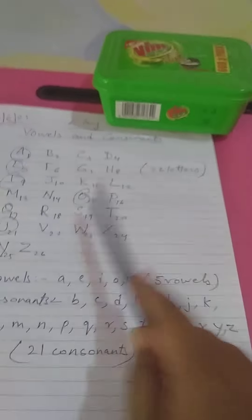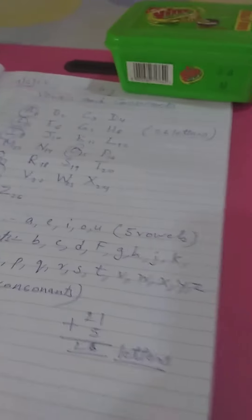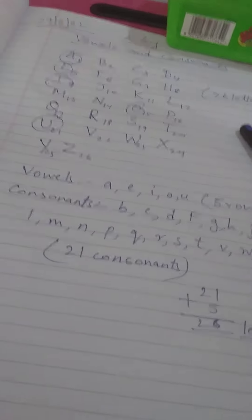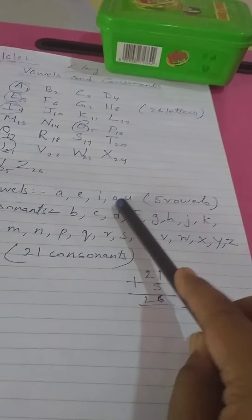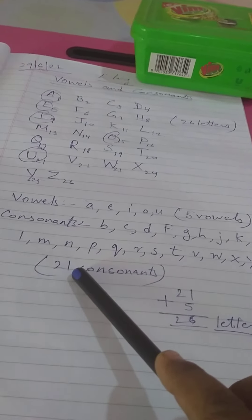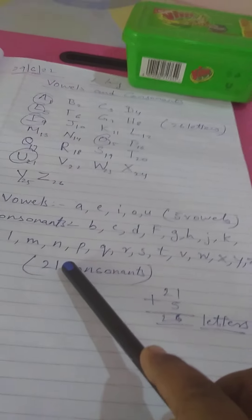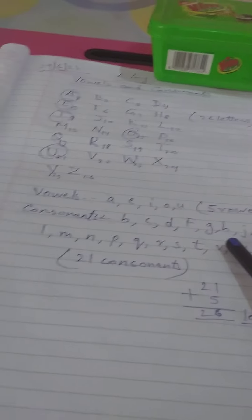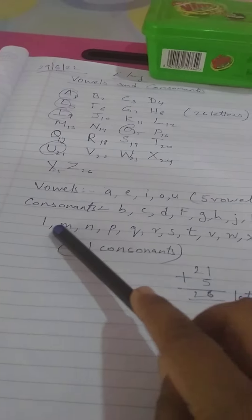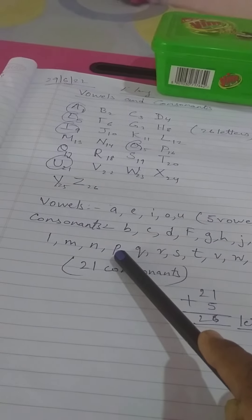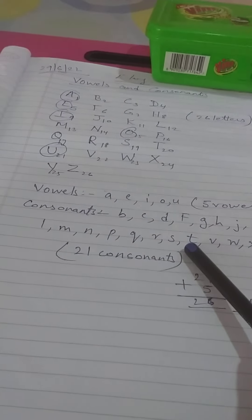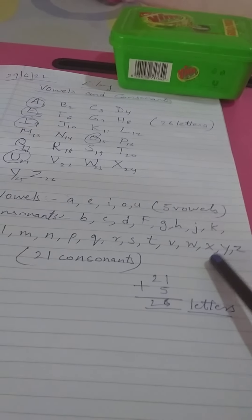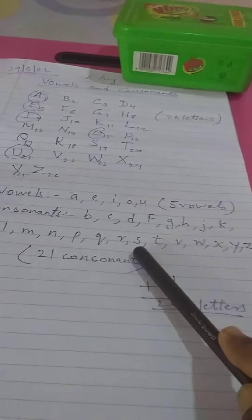Total 26 letters from A to Z. Out of this 26, there are 5 vowels: A, E, I, O, U. And the rest, 21 are consonants: B, C, D, F, G, H, J, K, L, M, N, P, Q, R, S, T, V, W, X, Y, and Z. So 21 consonants and 5 vowels.